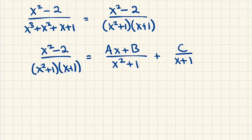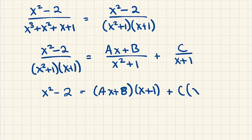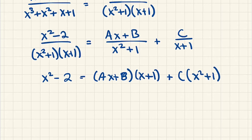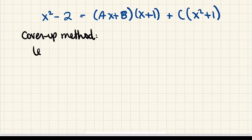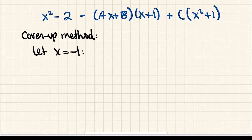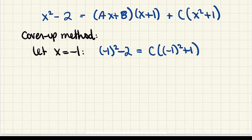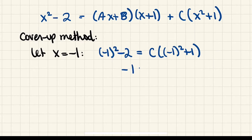Multiplying everything by the denominator gives x squared minus 2 equals (Ax plus B)(x plus 1) plus C(x squared plus 1). Using the cover-up method, letting x equal negative 1 eliminates A and B: on the left we get 1 minus 2 equals negative 1, and on the right we get C times (1 plus 1) equals 2C. So C equals negative one-half.